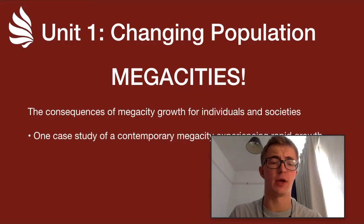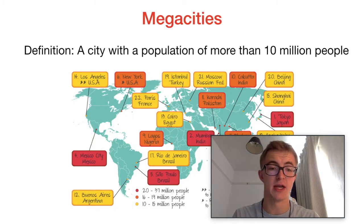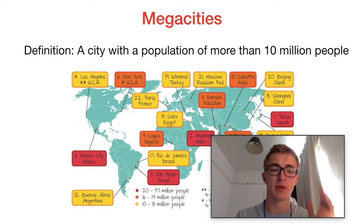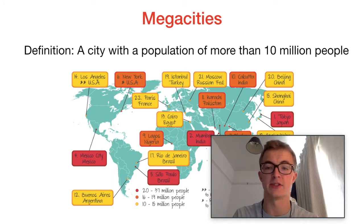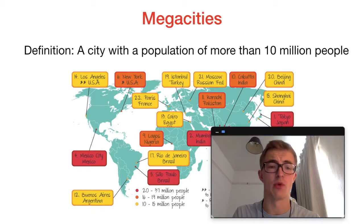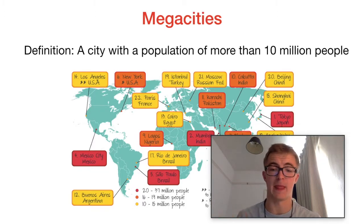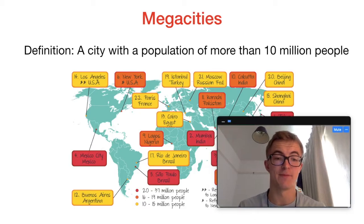Let's kick it off by talking about what a megacity actually is. By definition, it's a city with a population of more than 10 million people. In this diagram, I'm listing all those cities around the world that have either 10 to 15 million people (yellow), 16 to 19 million (orange), or 20 to 37 million people (red).